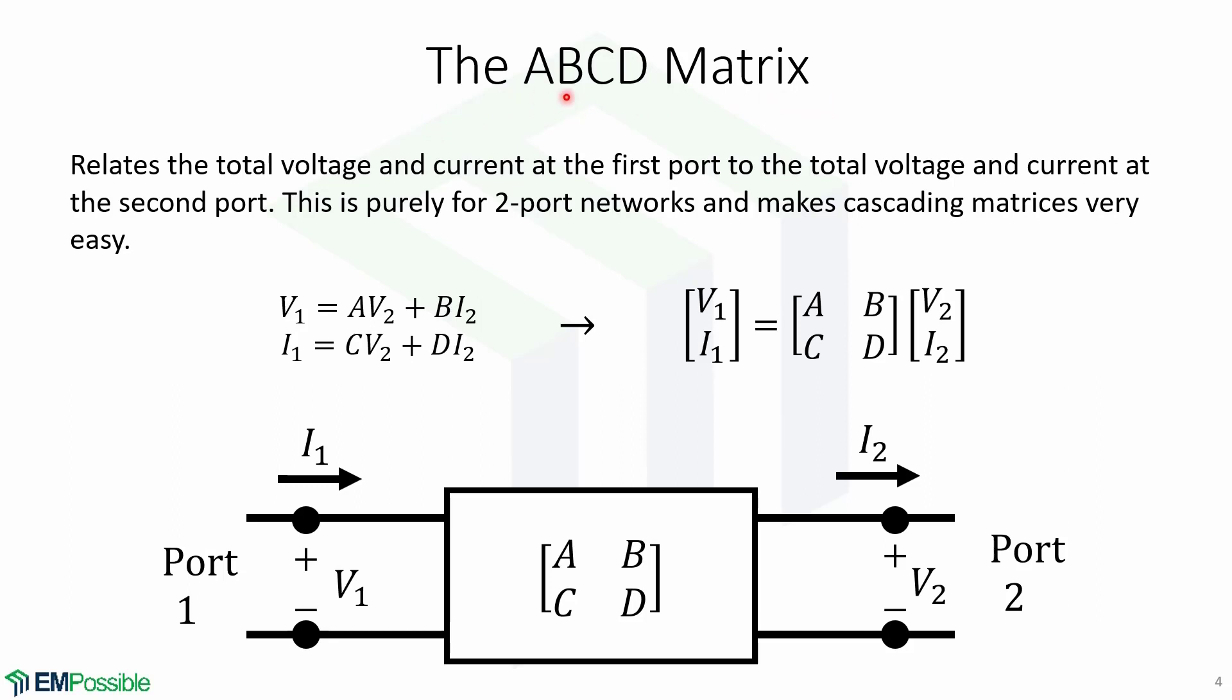The ABCD matrix or transmission matrix relates the total voltage and current at the first port to the total voltage and current at the second port. This matrix is used only for two-port networks and makes cascading matrices very easy. As we will see later, it is only a multiplication of matrices.